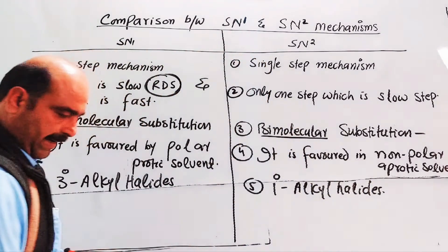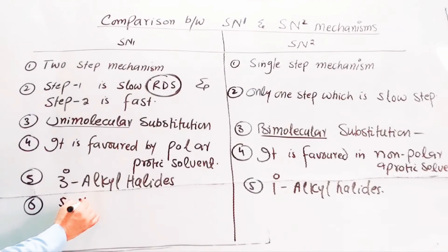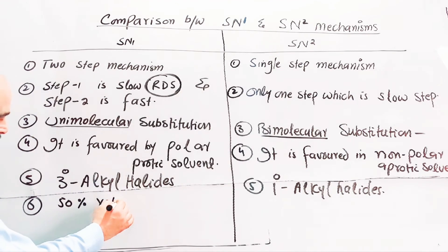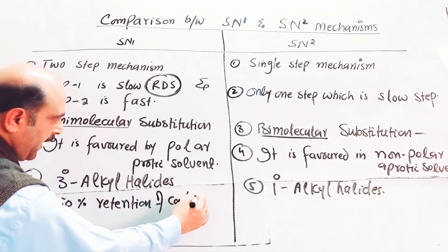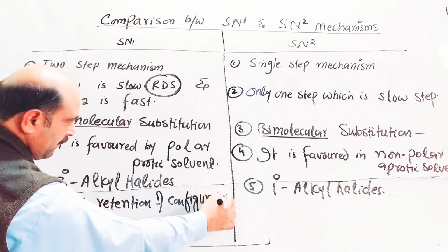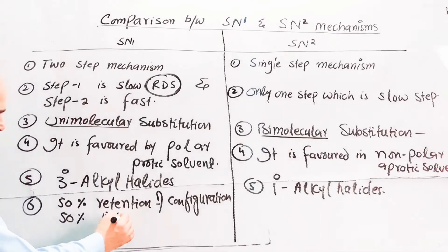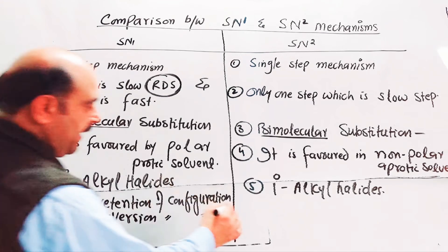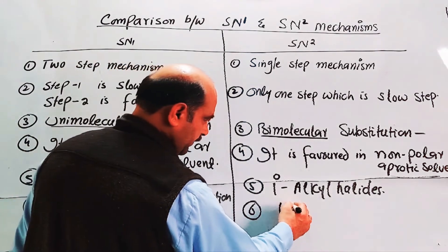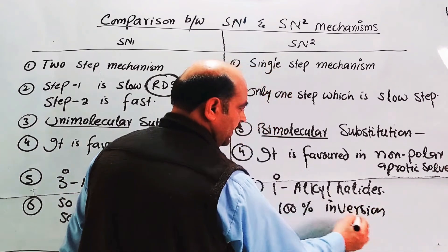Point number six: In SN1, there is 50% retention and 50% inversion of configuration. In SN2, there is 100% inversion of configuration — 100% inversion takes place.